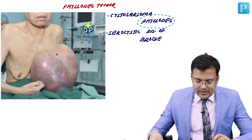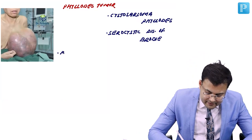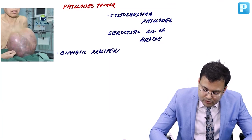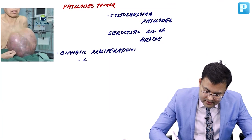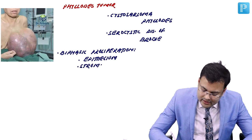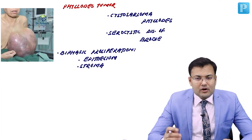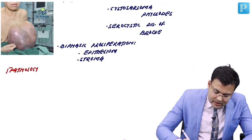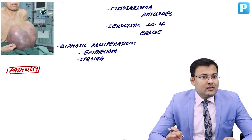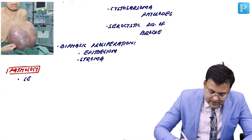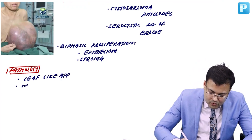Important points: it is characterized by biphasic proliferation of both mammary epithelium and connective tissue or stroma. It can be benign, borderline, or malignant. On cut section, leaf-like appearance is present — that's why the name is phyllodes. These tumors have monoclonal stroma.